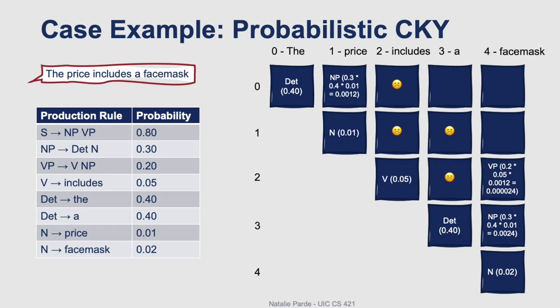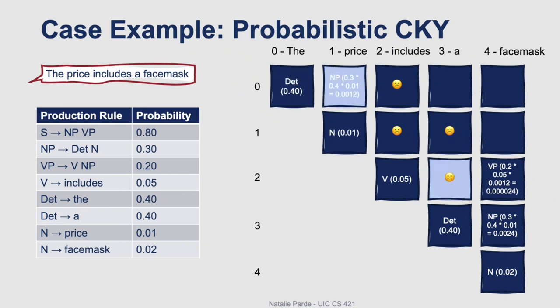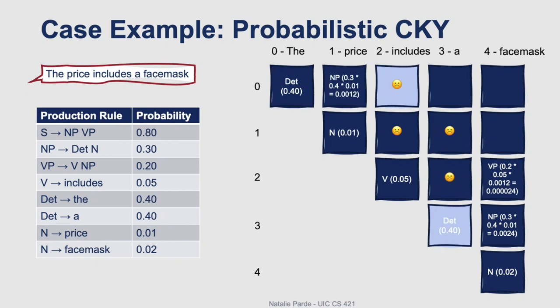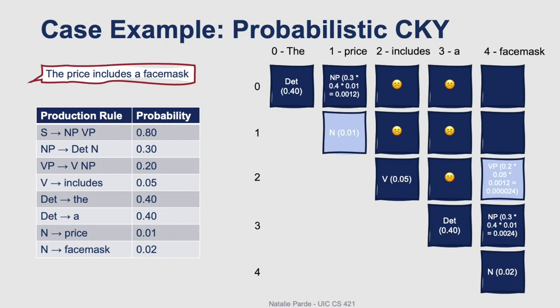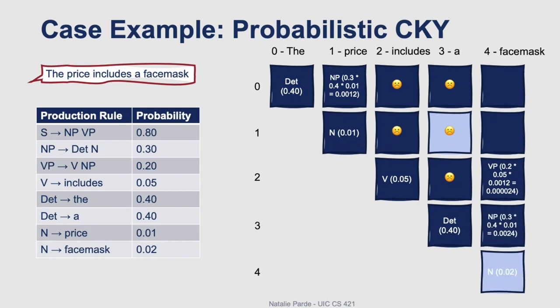Next, we'll move on to four-word constituents. We'll start by checking "the price includes a" — this option would be impossible, and so would this one, and this one, so no hits there. We'll check the other four-word constituent, "price includes a face mask". We'll see if a noun followed by a verb phrase is a match — it doesn't look like it is. The other options would also be impossible, so we can't fill this spot either.